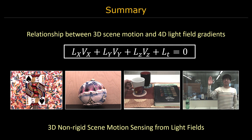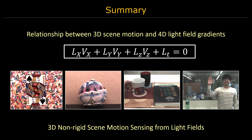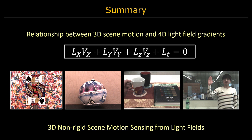In summary, we derive a linear equation that relates 3D scene motion with light field gradients. By adapting techniques from optical flow research, we propose novel approaches for recovering 3D motion. Initial results show the proposed methods can recover motion for a wide range of scenarios.